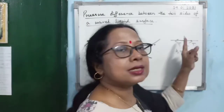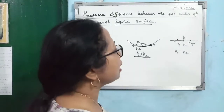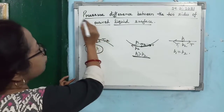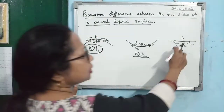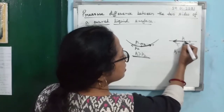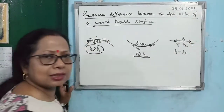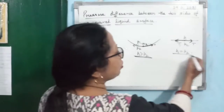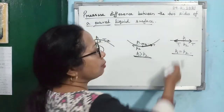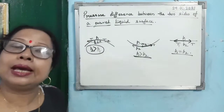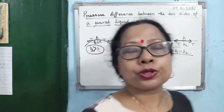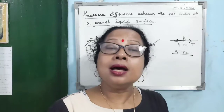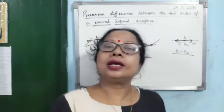When the liquid meniscus is plane, surface tension acts in two opposite directions, cancelling each other. So there is no resultant force acting on the molecule, and pressure above the meniscus P1 equals pressure below P2. Therefore, an excess pressure acts only on the concave side of a curved liquid meniscus.